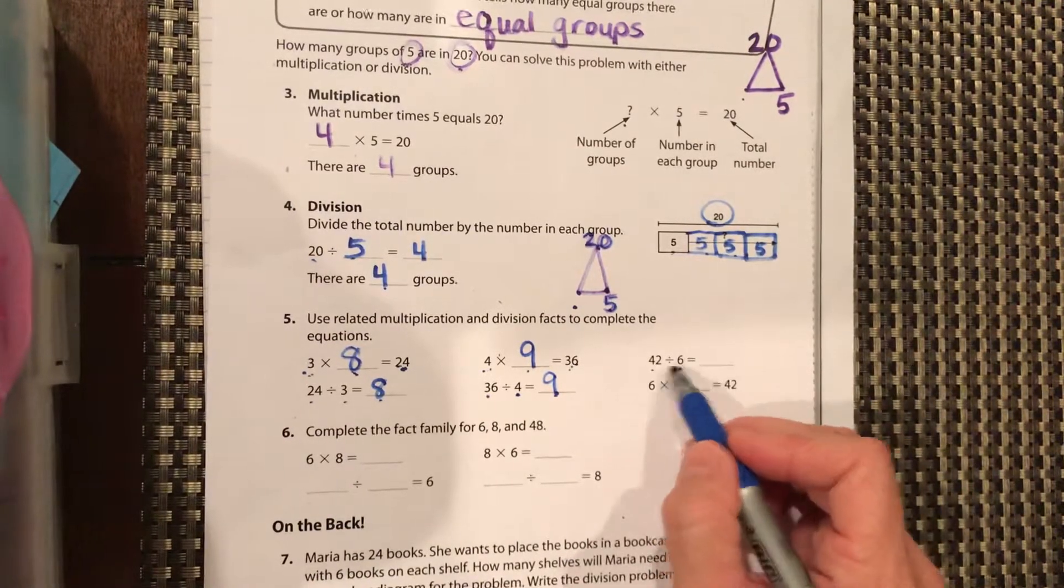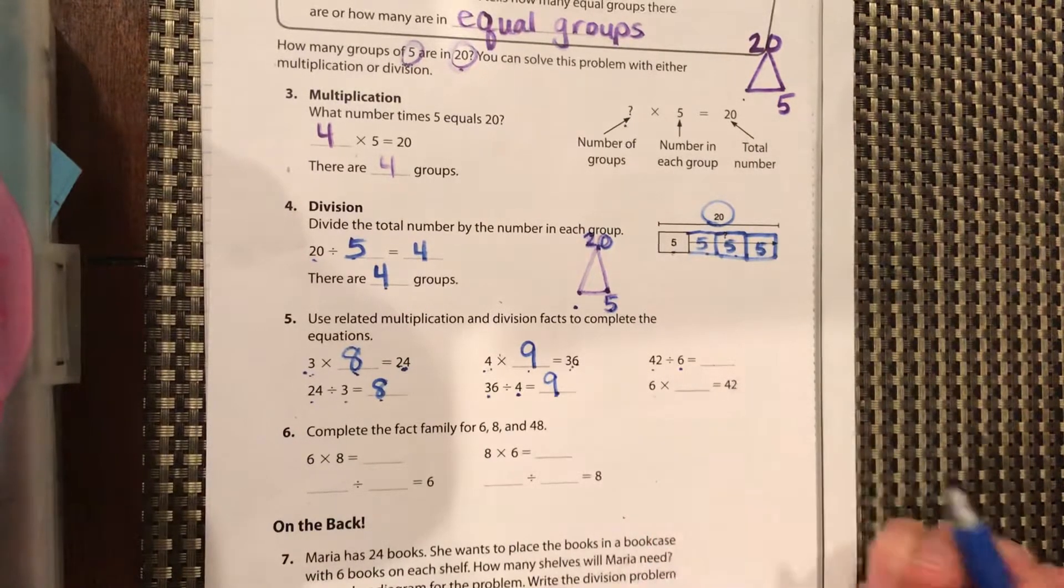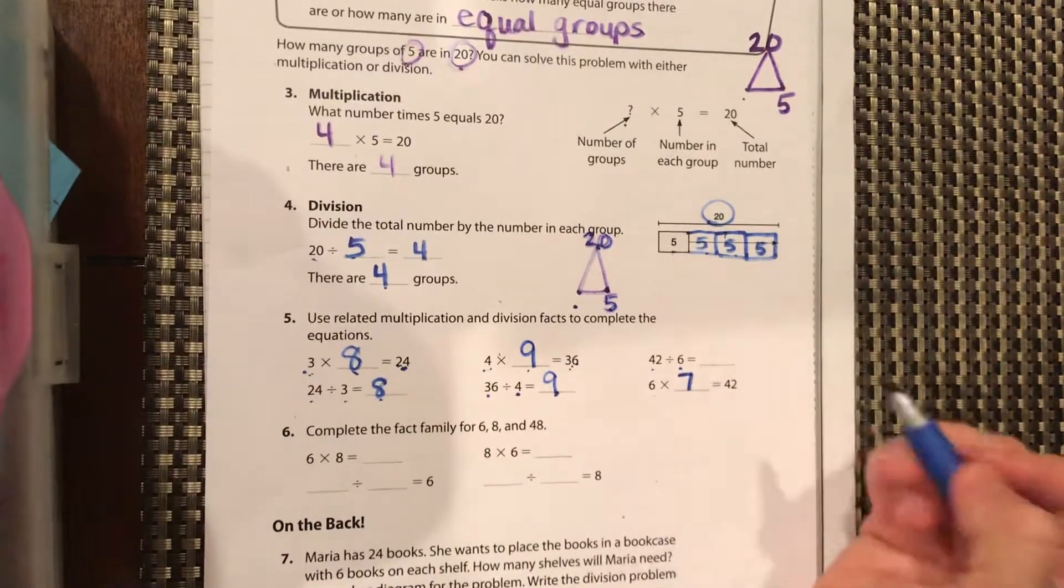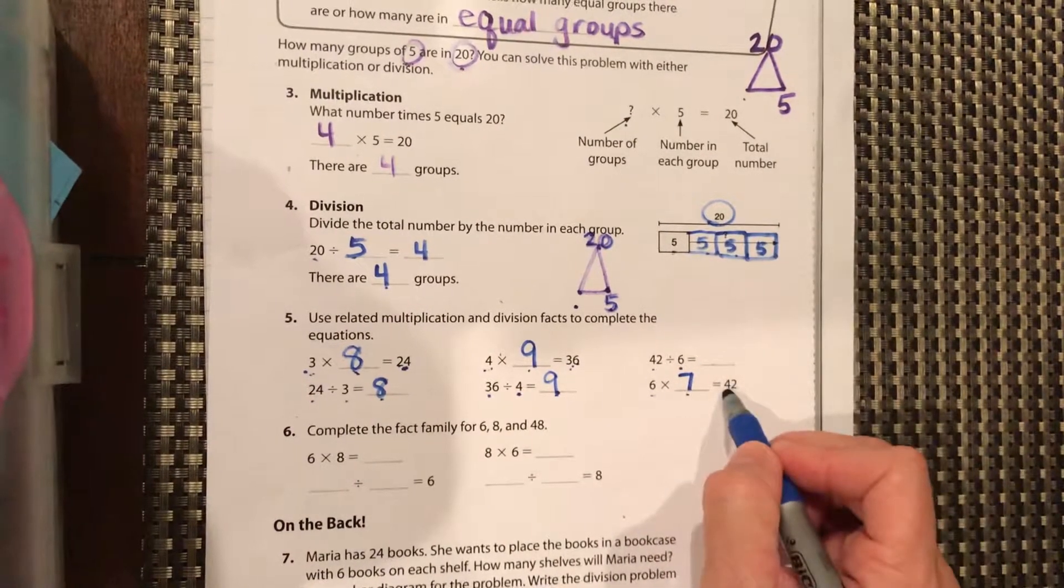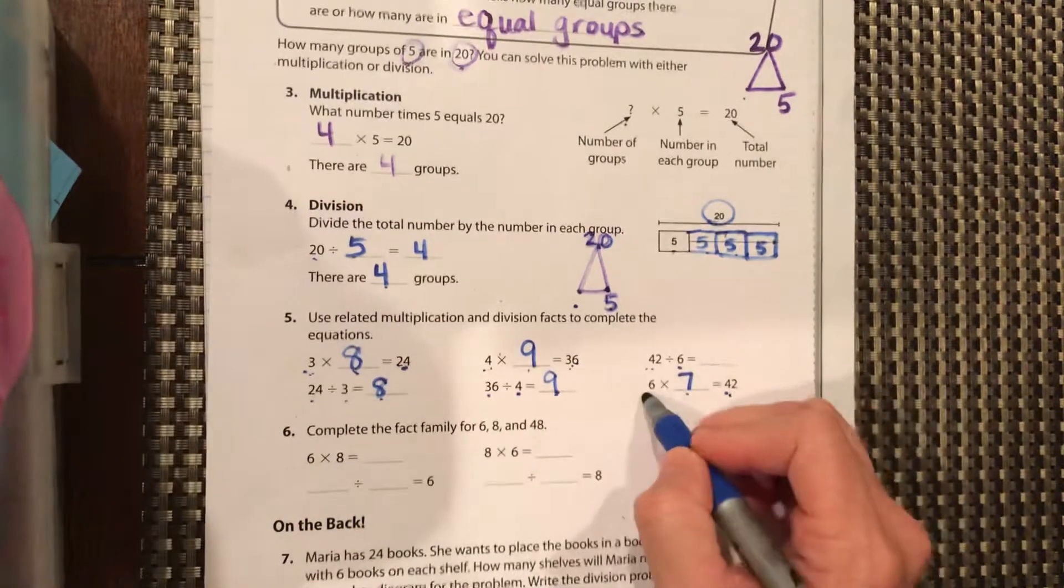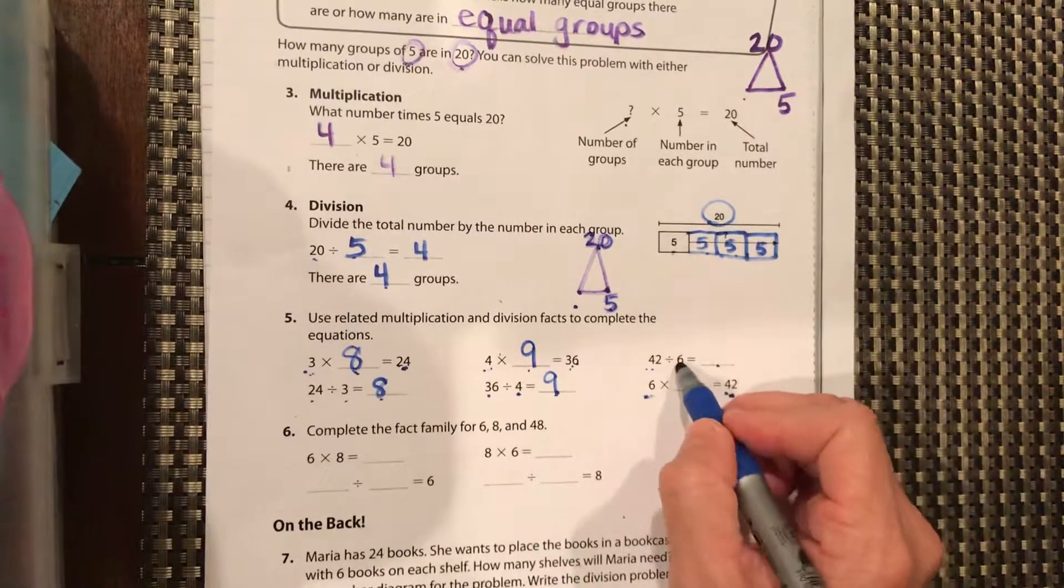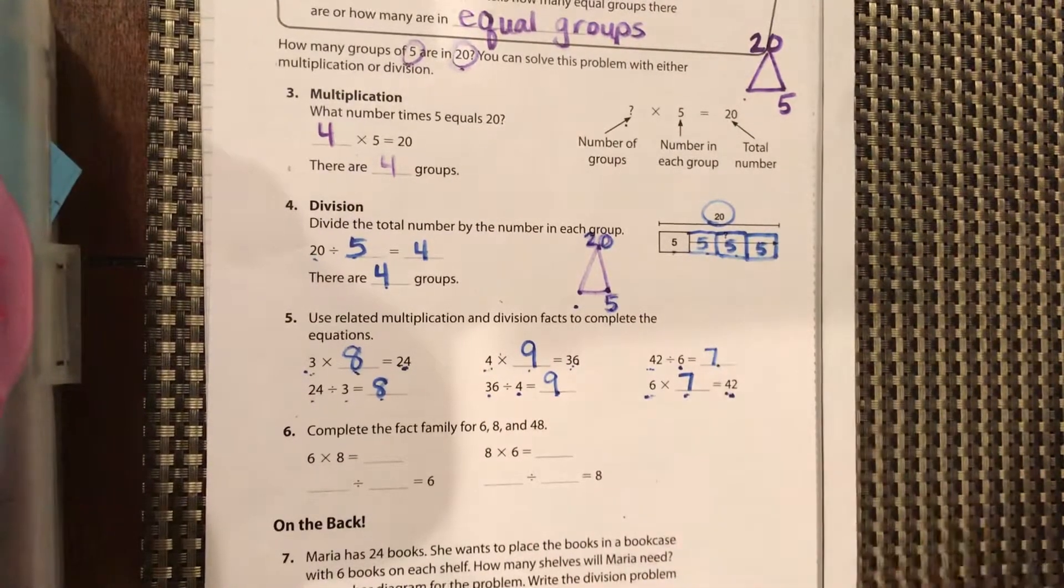42 divided by six equals what? Use the multiplication. Six times what equals 42? It's seven. So if six times seven equals 42, then we know that 42 divided by six, or what times six equals 42, and that's seven.